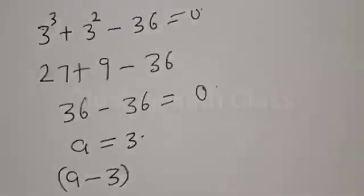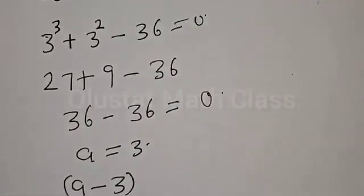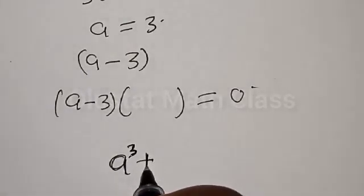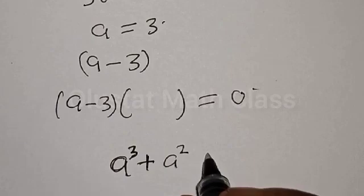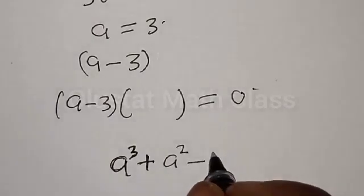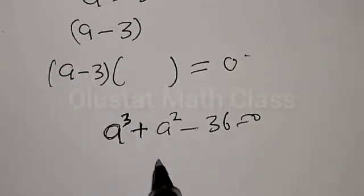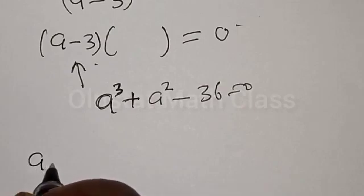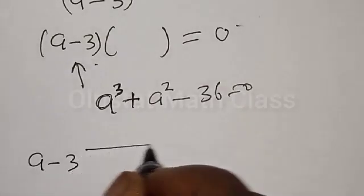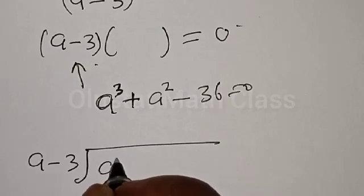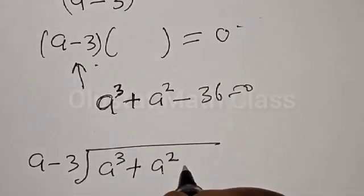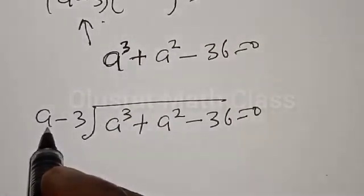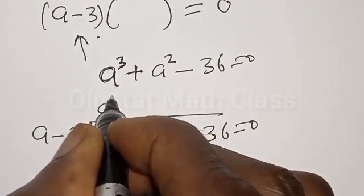We can get that using long division, which is the easiest way. We have the given equation a raised to power 3 plus a squared minus 36 equal to 0. By using long division, we want to divide by a minus 3. So we want to get the other roots. Then a divided into a raised to power 3 gives us a squared.